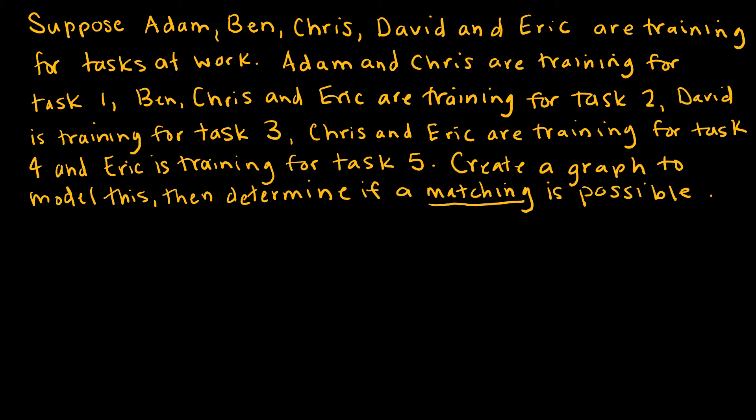So if I want to create a graph to model this, I'm going to use Adam, Ben, Chris, David, and Eric. Those are my people. Now, obviously, this is going to be a bipartite graph because Adam is not going to learn Ben or Chris or David or Eric. Adam is going to learn a task. So now I have to put my tasks out. So my task 1, 2, 3, 4, 5.